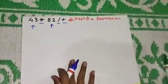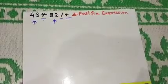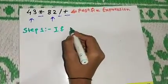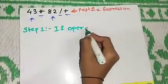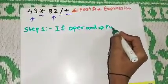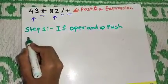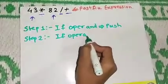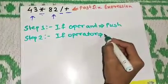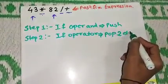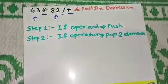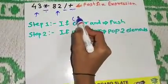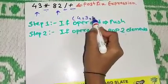We need to understand two steps. First step: if an operand is present, push it into the stack. Second step: if an operator is present, pop two elements from the stack. In our expression, the operands are 4, 3, 8, and 2, and the operators are multiplication, division, and addition.